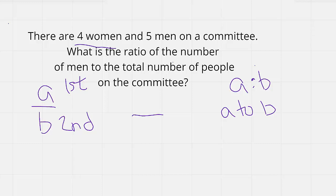So the ratio they're asking for—they said they want the total number of men. Since they mentioned the total number of men first, that's going to be our numerator. And then the total number of people on the committee is going to be our denominator.